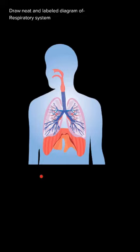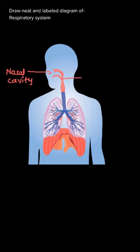Here we have taken this diagram of a respiratory system. One by one we will look at the different organ parts of this system. So the first part which comes in is the nasal cavity.